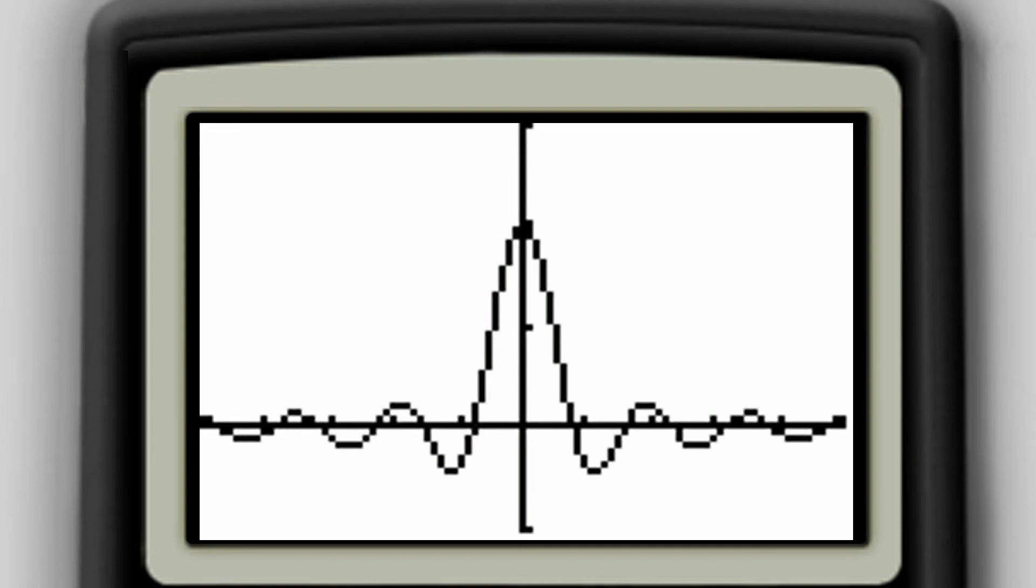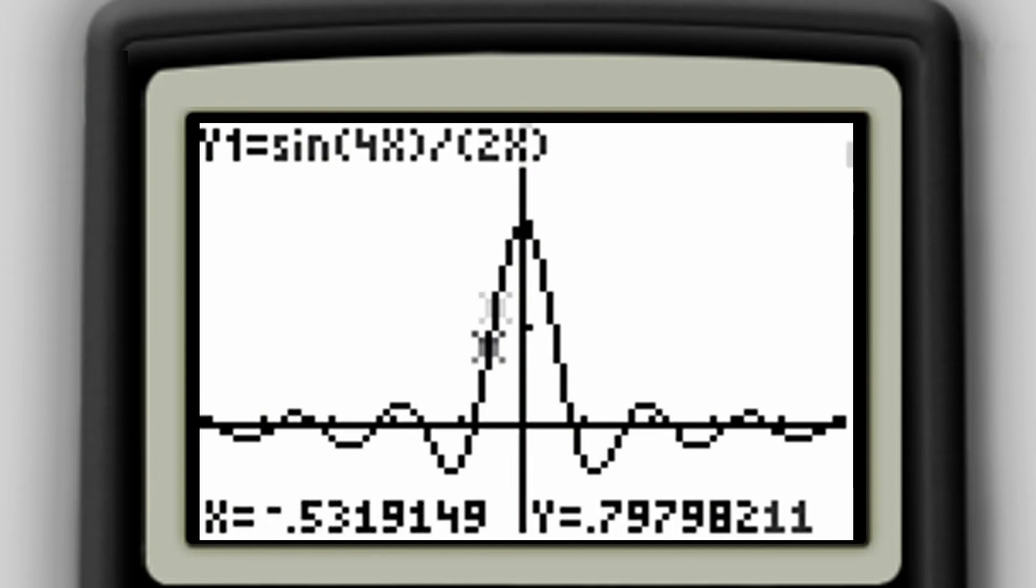And when I hit the trace key, I'm going to be able to use my arrow keys to move along the curve. And I can see that as I'm moving along the curve, as my x values are getting closer to 0, my y values are getting closer to 2. And it doesn't matter whether I'm tracing a little before I hit 0 or a little after I hit 0. As I'm approaching 0, the values are getting closer and closer to 2.